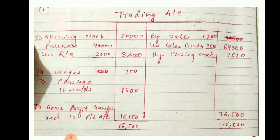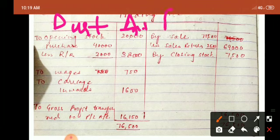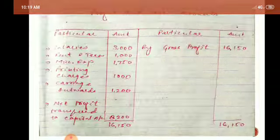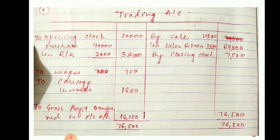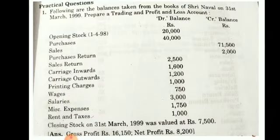Carriage outward is recorded in the profit and loss account, not the trading account. The sales amount is given as seventy-two thousand five hundred, and sales returns are two thousand five hundred. Deducting sales returns from sales gives us net sales of seventy thousand. Closing stock is also given in the question as seven thousand five hundred.